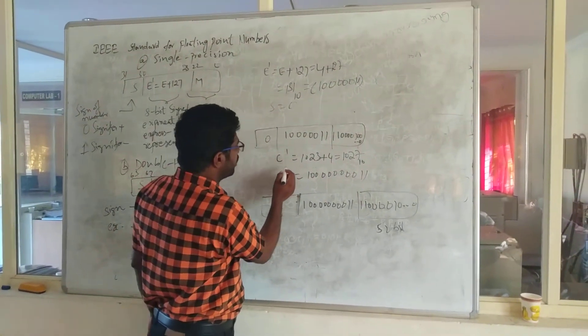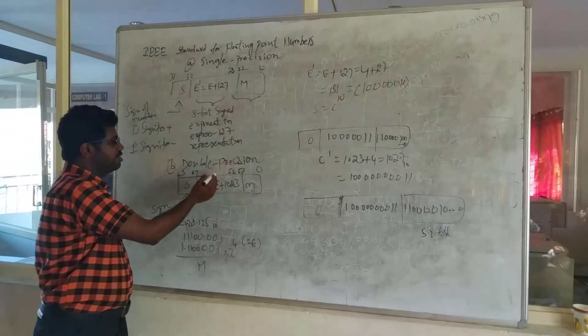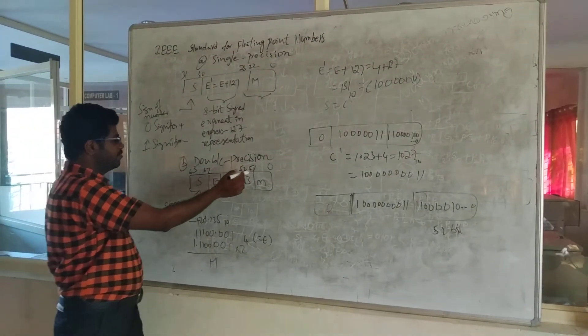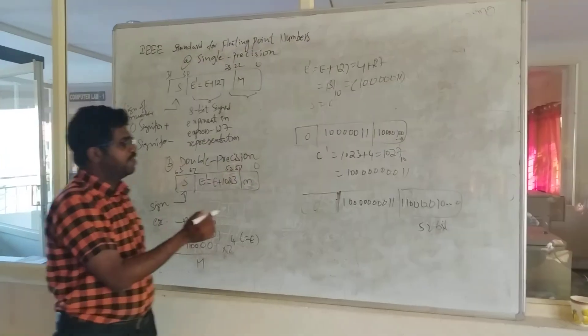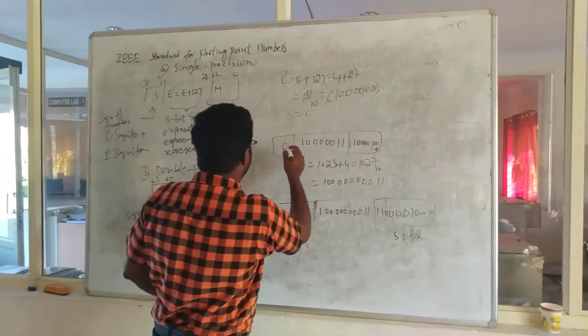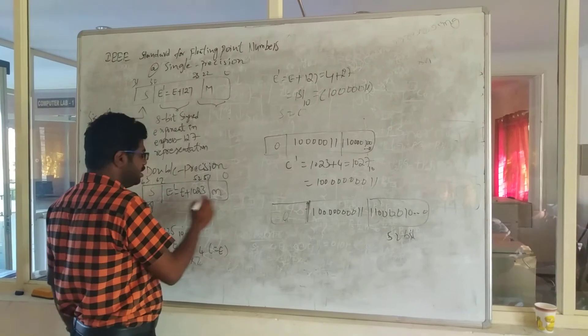Like that we can go for double precision calculation. Double precision is from 0 to 64 bits. For the same problem you could write. So here I am going to write the E'.